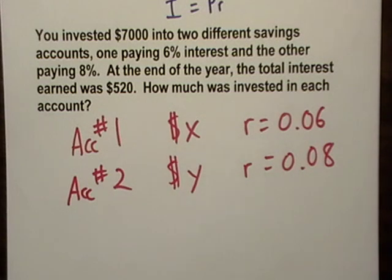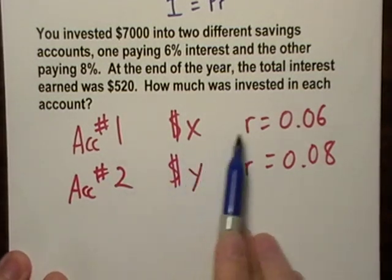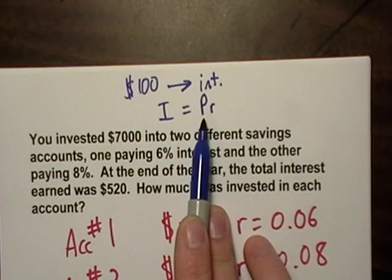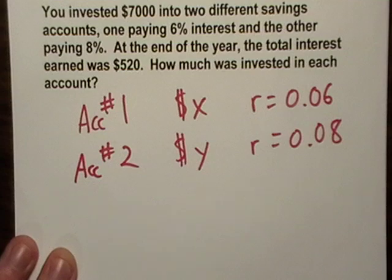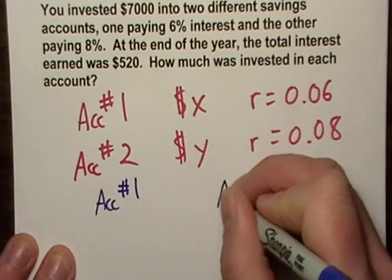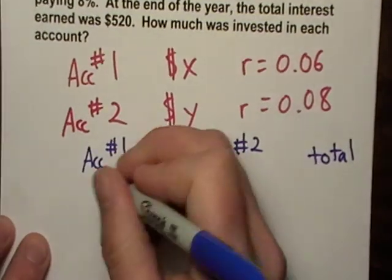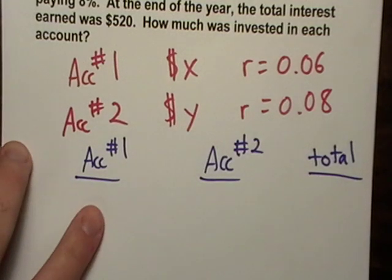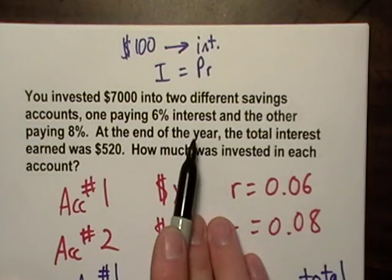Because first of all, if I want to find the interest in account number one, I use the same formula here. I take how much money did I put in the account, multiplied by the rate, and that'll give me the interest. So I'm going to do that for account number one. Account number one, how much interest? I'm finding total interest, remember, the total interest.